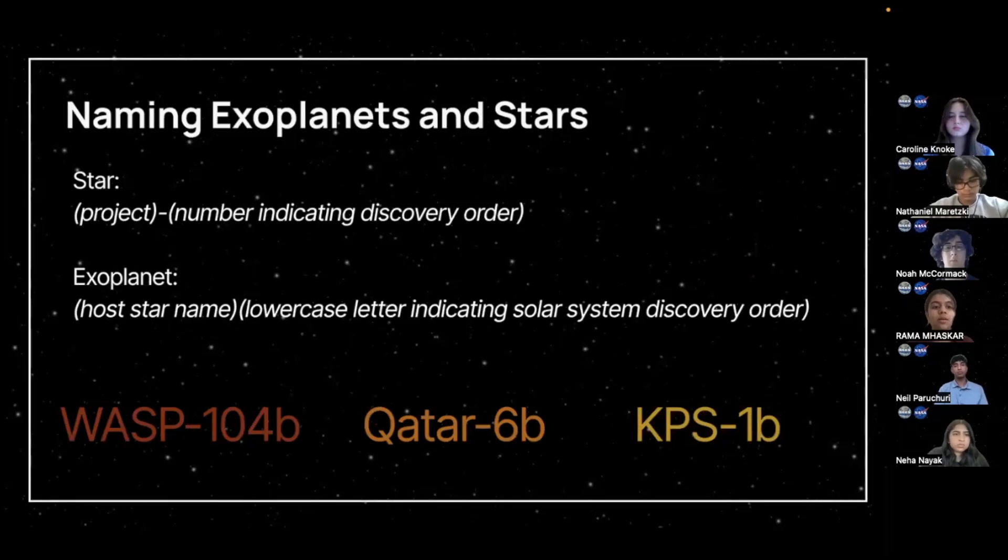So, let's talk about a little bit of exoplanet and star naming. For stars, the naming convention utilized is project-number-indicating-discovery-order, and for exoplanets, the naming convention is host-star-name, and then a lowercase letter indicating solstice-discovery-order. And this order is alphabetical, starting at b. For example, some examples of star names could be WASP-104, Qatar-6, or KPS-1. And exoplanet name examples are WASP-104b, Qatar-6b, and KPS-1b.